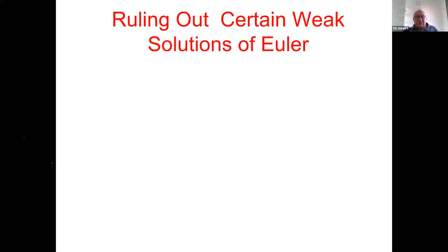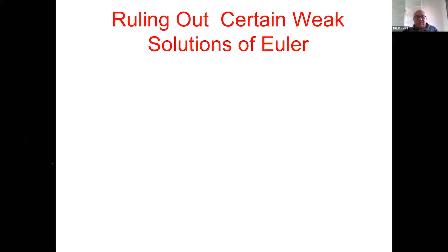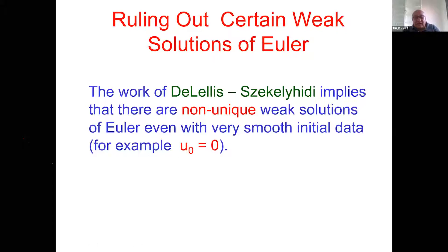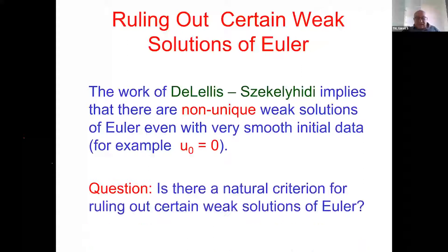If there is no uniqueness, we should rule out solutions that are not physical. Solutions with compact support in time — where you would create energy from nothing — are non-physical. The machinery in different contexts has introduced so much richness; we need to explore it well to get physical intuition and relate these solutions to turbulence. The question is: what are the selection or ruling-out criteria?